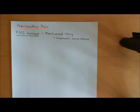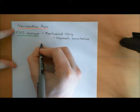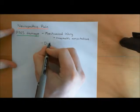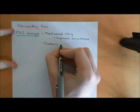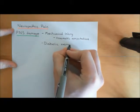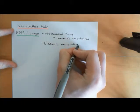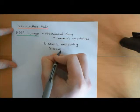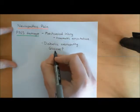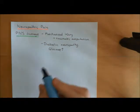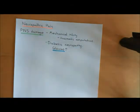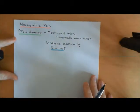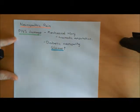Other examples of things that can cause damage to peripheral nervous system primary nociceptive afferents include diabetic neuropathy. The mechanisms are still debated, but the basic phenomenon is that in poorly controlled diabetes, blood glucose is dangerously too high, and this elevated blood glucose results in damage to peripheral nervous system neurons.